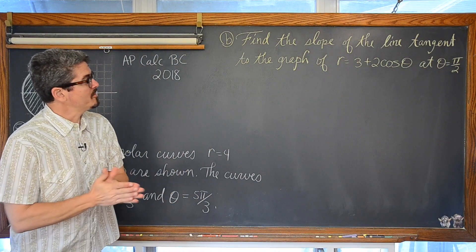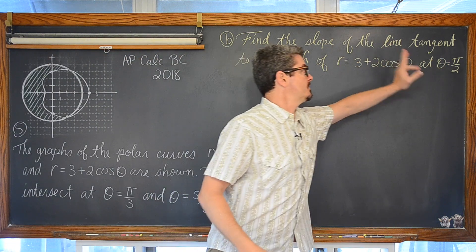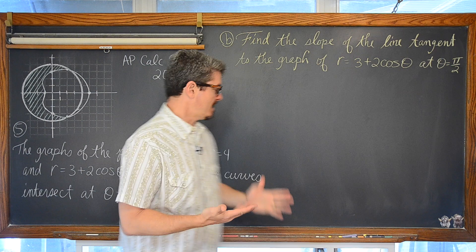For part B, we want to find the slope of the line tangent to the graph of r equals 3 plus 2 cosine of theta at theta equals pi over 2.